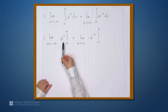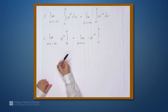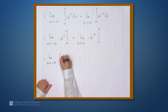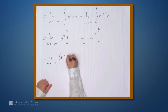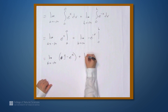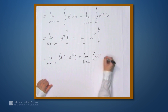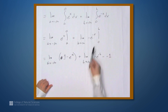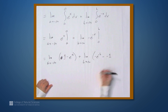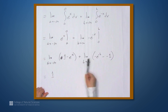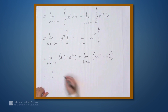Evaluating e to the x at 0 gives 1, and at a gives e to the a. So this is the limit as a approaches negative infinity of 1 minus e to the a, plus the limit as b goes to infinity of negative e to the negative b minus negative 1. As a goes to negative infinity, e to the a goes to 0, so we're left with 1 from the first part. As b goes to infinity, e to the negative b also goes to 0, leaving negative negative 1, which is simply 1. So we get 1 plus 1, which is 2.